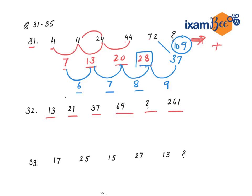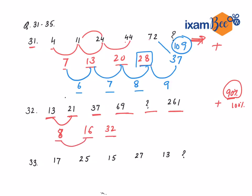Next question: again 2-digit numbers so we think it will be plus. The differences are 8, 16, 32 — these are doubling: 8×2=16, 16×2=32, so next should be 64, then 128. Adding 69 and 64 gives 133. And 133 plus 128 gives 261, which confirms the pattern. So your answer is 133.